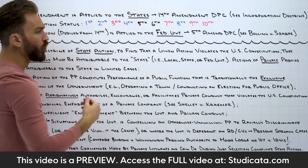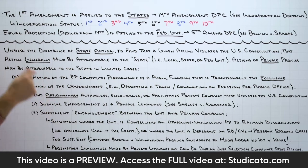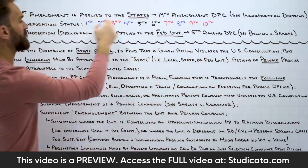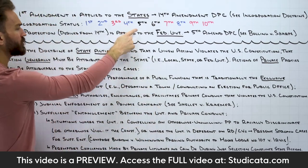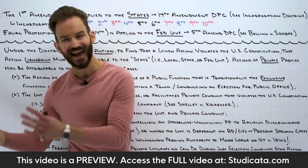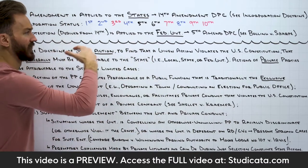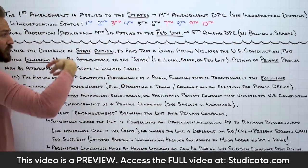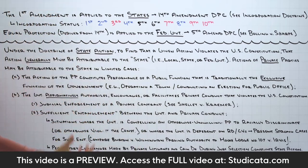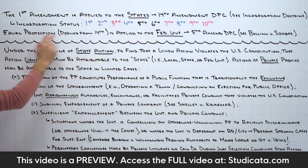As these amendments get incorporated into the Fourteenth Amendment Due Process Clause, the Bill of Rights — which at default applied to the federal government — now also applies to the states through that process. The First, Second, Fourth, and Eighth Amendments in their entirety, and portions of the Fifth and Sixth, have been incorporated into the Fourteenth Amendment Due Process Clause. It's the same idea with equal protection derived from the Fourteenth Amendment.